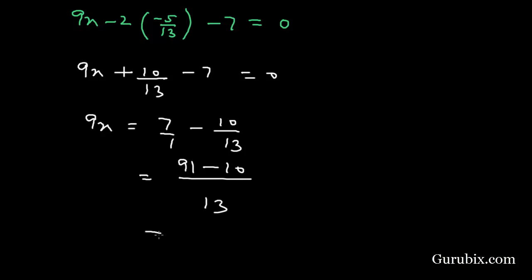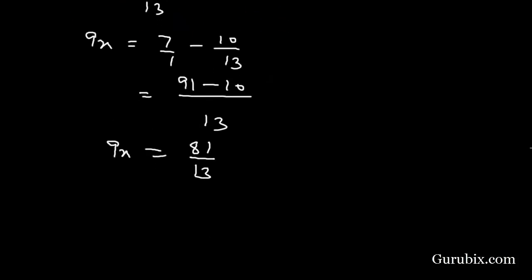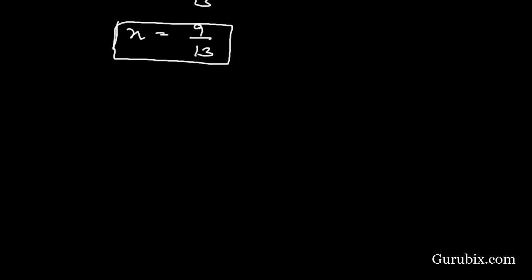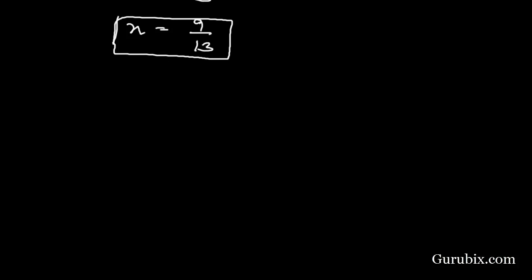This equals 81/13. Therefore 9x = 81/13, so x = 9/13. This completes the elimination method to solve the equations. Now we shall apply the substitution method.